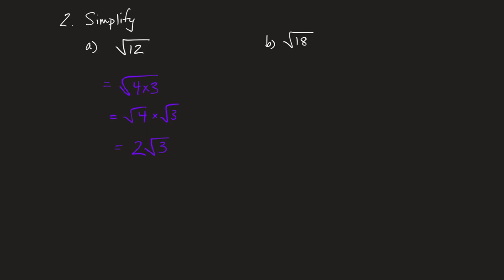Now, that should have been automatic for everybody. Maybe it gave you a little more insight as to why, but that should have been automatic. What I want us to do, though, is to be able to go from root 12 straight to 2 root 3 and never write that stuff down. My best method that I've ever come across to do that is to go back to something you hopefully got a little introduction to way back in grade 4 — factor trees.